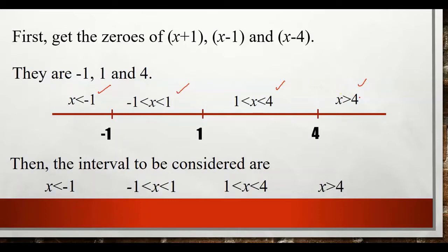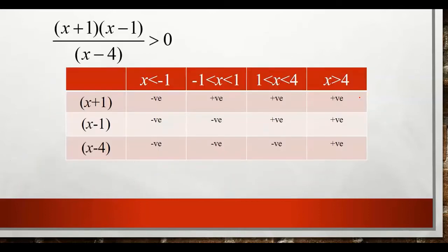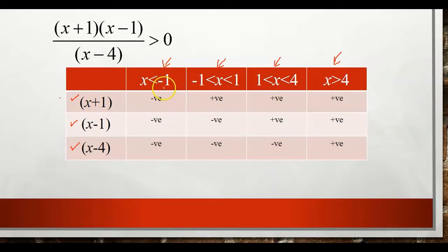We draw the table with the four intervals across the top and list all factors and the divisor in the first column. To determine the signs in the table, we substitute an x value from each interval into each factor. For example, for x less than negative 1, use x = negative 2: substituting into x+1 gives a negative result. For x between negative 1 and 1, x+1 gives a positive result. For x between 1 and 4, also positive, and so on until all signs are filled in.